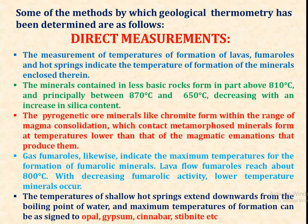The minerals contained in less basic rock formed in part above 810 degrees Celsius and principally between 870 degrees Celsius, decreasing with an increase in silica content. The basic rocks are 650 degrees Celsius to 870 degrees Celsius. The pyrogenetic ore minerals like chromite form within the range of magma consolidation, while contact metamorphosed minerals formed at temperatures lower than that of the magmatic emanation that produced them.